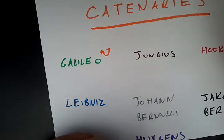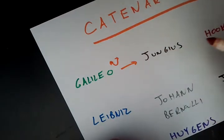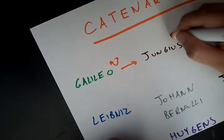But what happened was the German mathematician Jungus proved him wrong, and he said that this is not a parabola, this is something totally different, this is a catenary. But he basically proved that it was not a parabola.